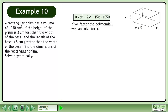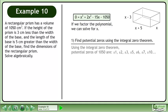If we factor the polynomial, we can solve for x. The first step is to find potential zeros using the integral zero theorem. Using the integral zero theorem, potential zeros of 1050 are listed.